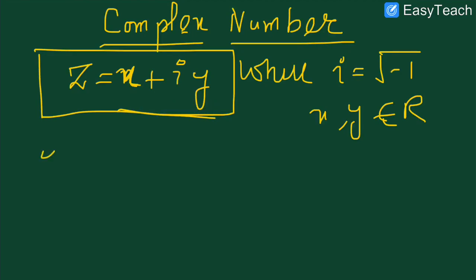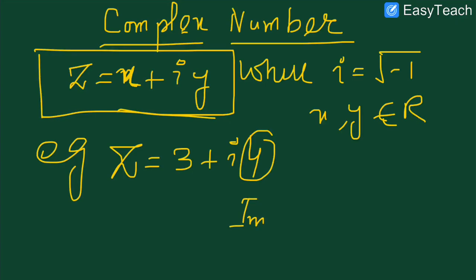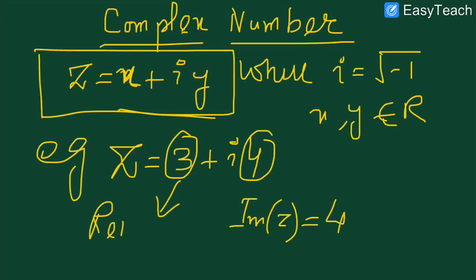For example, if I write z equal to 3 plus iota 4, this is a complex number. Here, 4 is called the imaginary part of z, and 3 is called the real part of z. So the real part of this complex number is 3 and the imaginary part is 4.